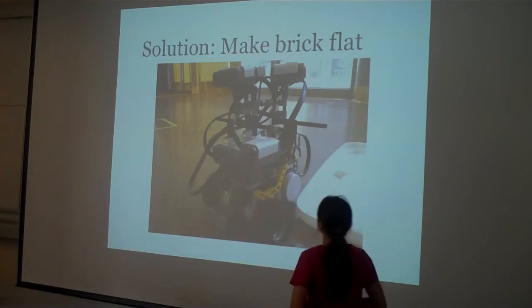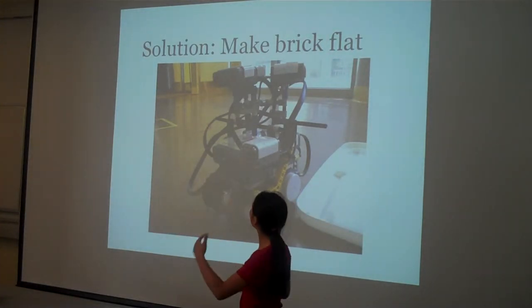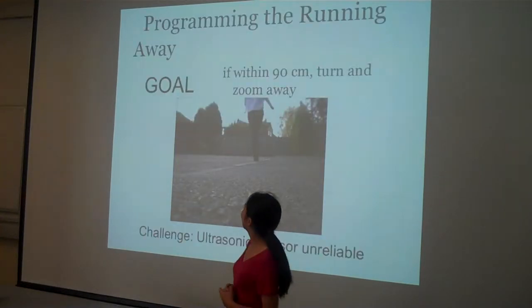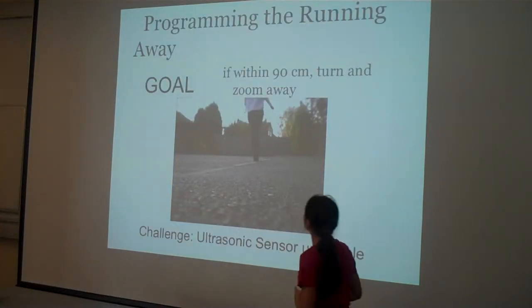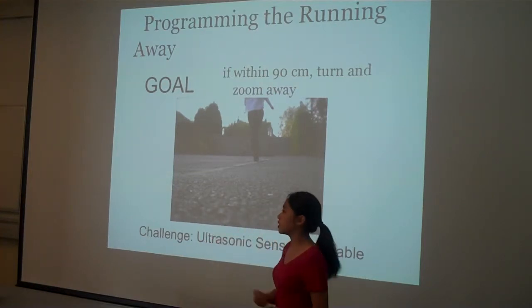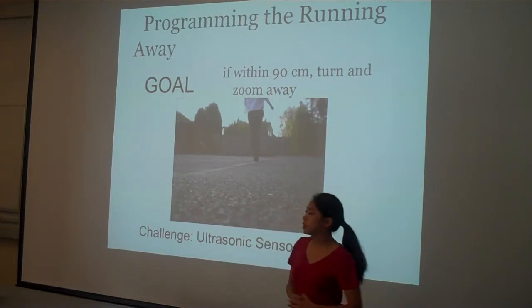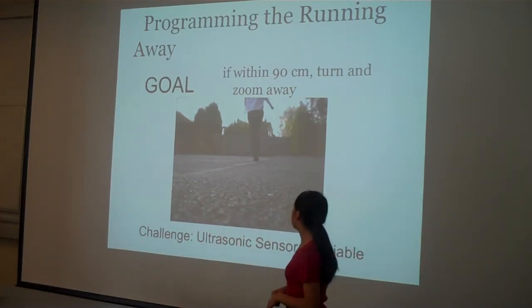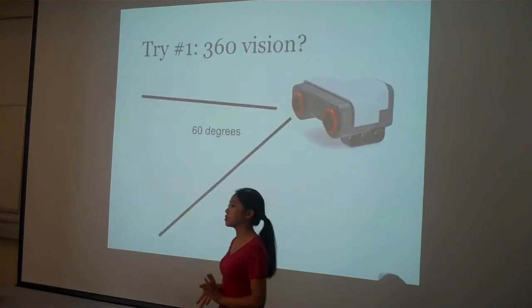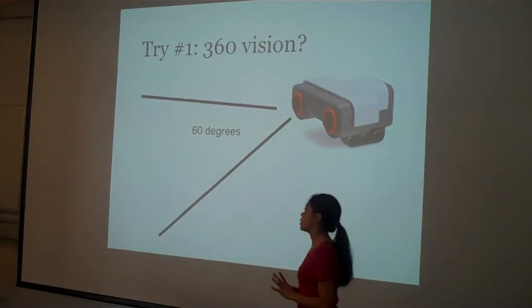And then my second thing I had to do was start to program the robot. And what I wanted it to do was basically if it saw anything within 90 centimeters from it, it would turn and run away. But the thing is that ultrasonic sensors are unreliable. So this kind of stood as a problem for me in the future.